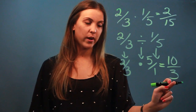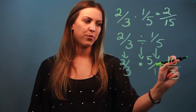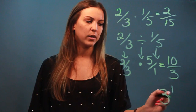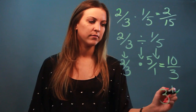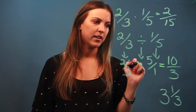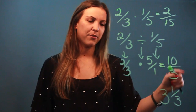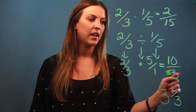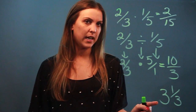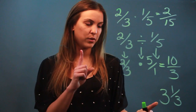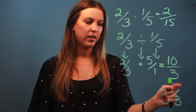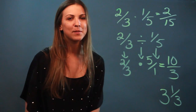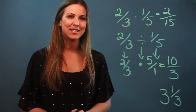If I wanted to make that a mixed number, I would do 3 goes into 10 three times with 1 left over, so I put the remainder in the numerator and the denominator stays as 3. So my final answer is 10 over 3, or as a mixed fraction, 3 and 1 third. And that's the difference between multiplying and dividing fractions.